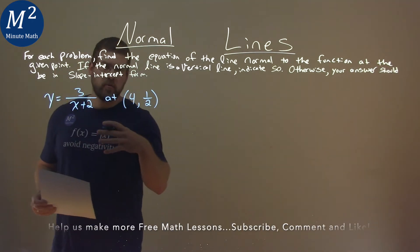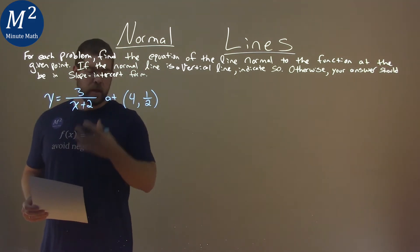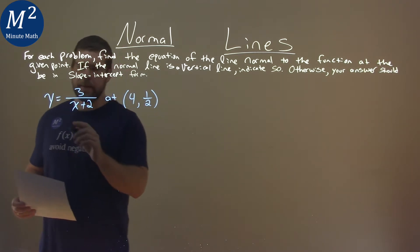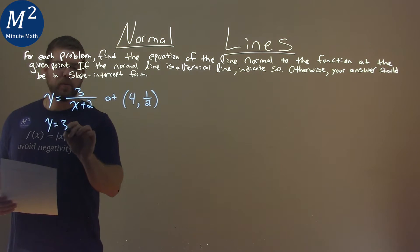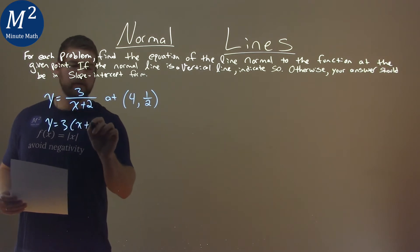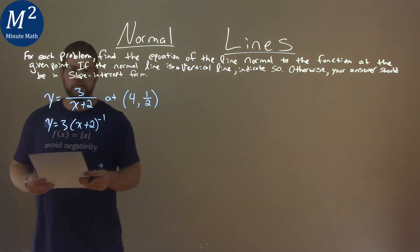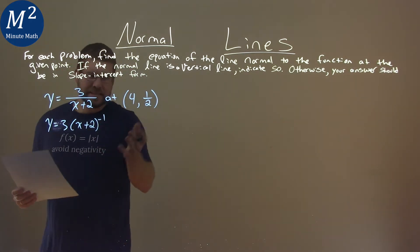Now, I know I'm going to have to find the derivative as part of my steps here, but I like to rewrite my function because I like to take the derivative a different way. y equals 3 times the denominator, x plus 2, to the negative 1 power. That allows me to, when I take the derivative, I just like seeing it this way.